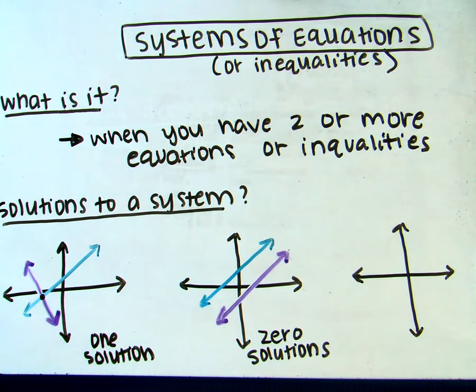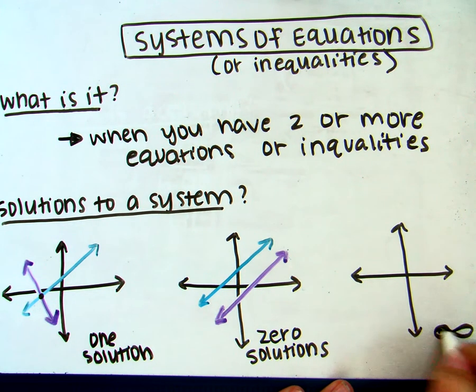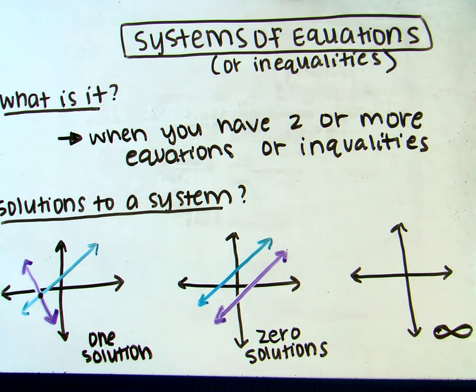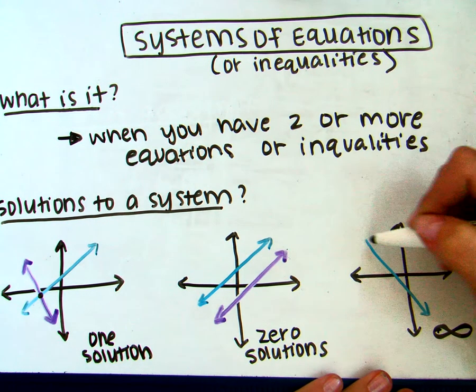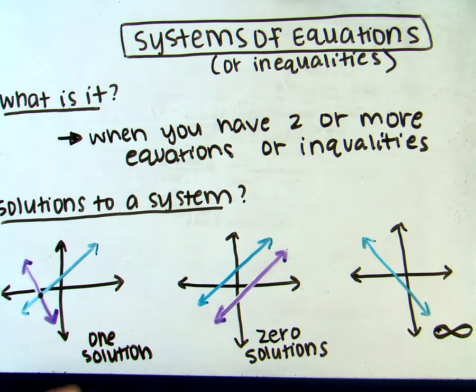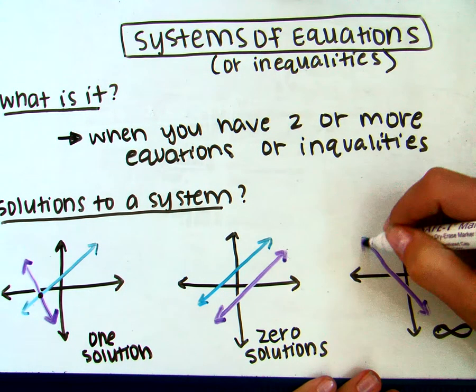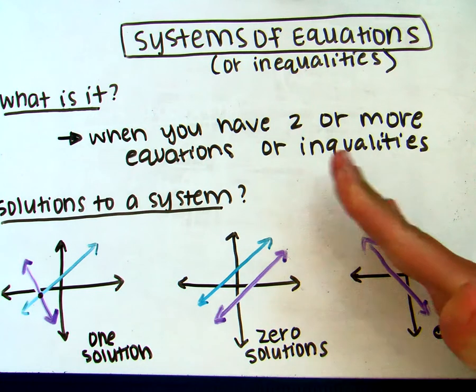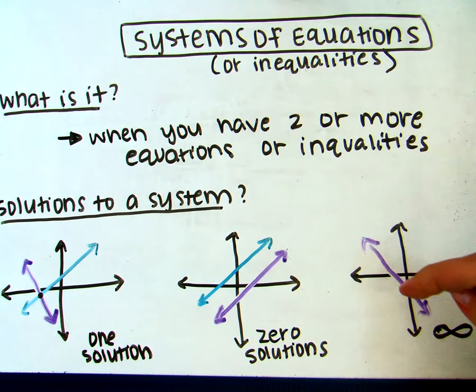The last case that you could have is when you have infinite solutions. The only time this could happen is whenever you have a line and your other line has to fall completely on top of it. In this case, they form one line on top of the other, so you have an infinite amount of solutions. They're connecting at every single point on that line.